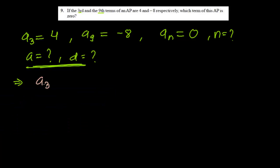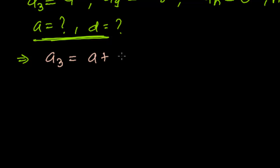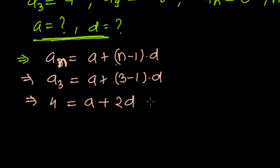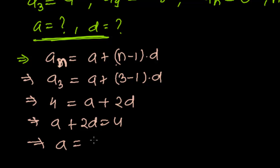So A3 equals A plus N minus 1 times D. Since this is A3, N will be 3, so it is A plus 3 minus 1 times D. A3 is given as 4, so 4 equals A plus 2D. Therefore, A equals 4 minus 2D. This is my first equation.